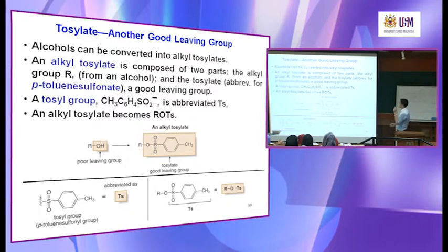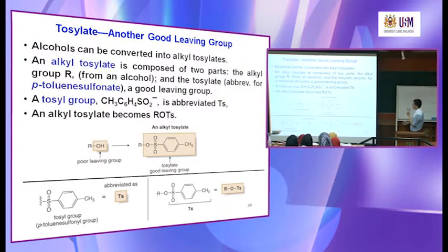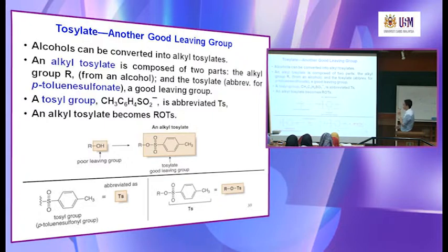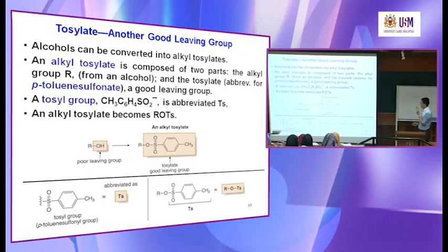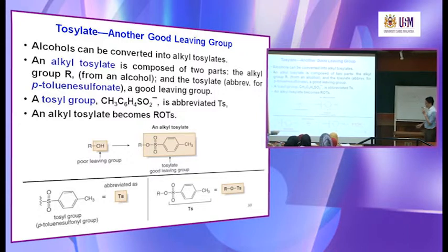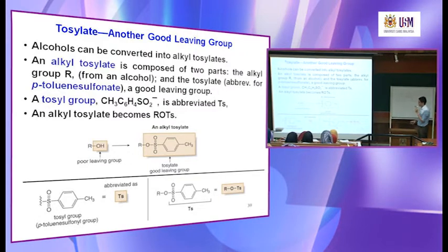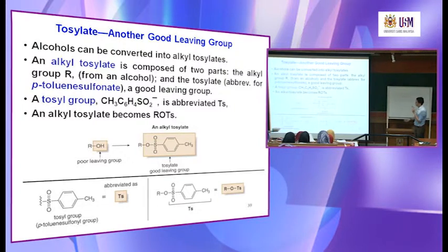An alkyl tosylate is composed of two parts: the alkyl group (R from an alcohol, that's why you have an O here) and the tosylate. Abbreviated for p-toluenesulfonate. This part is called the tosylate — this tosylate is a good leaving group. In short form you call it the Ts group. The whole group is called the tosylate group, abbreviated as Ts. That's why you say R-O-Ts. O is from the alcohol, R is the alkyl group, and Ts is the tosylate group.